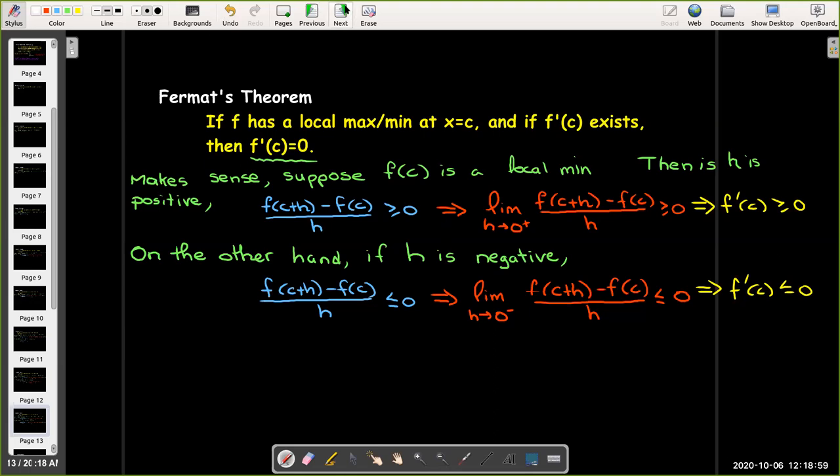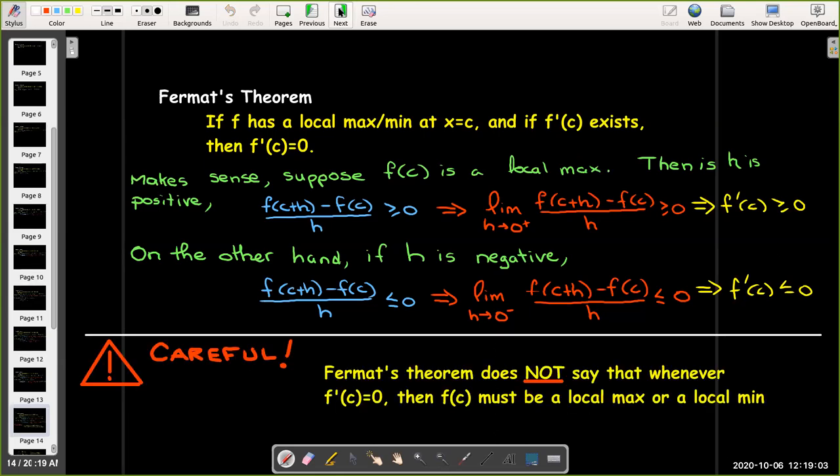So Fermat's theorem we can actually make some sense of that. Now we have to be really careful here because Fermat's theorem does not say that whenever f'(c) equals 0 then we must have a local max or a local min. That's the converse which is not true. What we need to be looking at is that what's given is we must start with a local max or min, and then if f'(c) exists then it must equal 0.